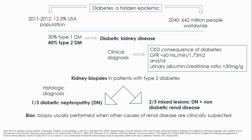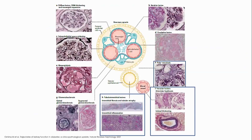The study of renal biopsies in diabetic patients is biased because biopsy is usually performed when non-diabetic renal disease is clinically suspected. In diabetic nephropathy, the thickening of the glomerular basement membrane with or without mesangial expansion is the gold standard for diagnosis. This lesion can be observed even in the absence of albuminuria. In early stages, nodular lesions and mesangiolysis are also present. As the disease progresses, exudative lesions appear, driving finally to glomerular sclerosis.